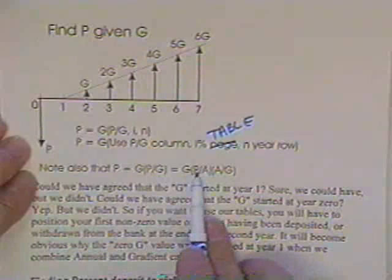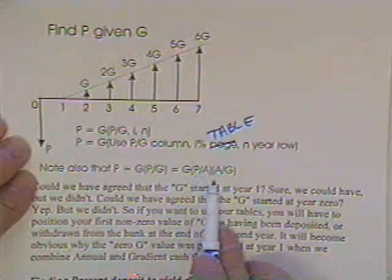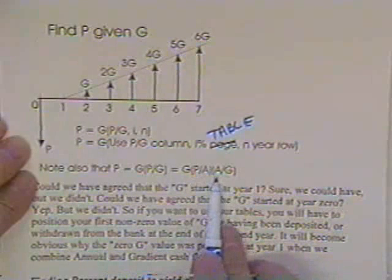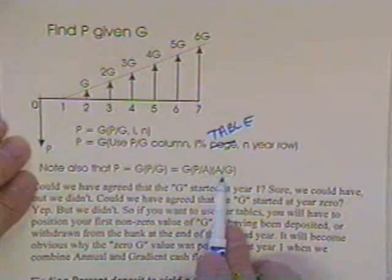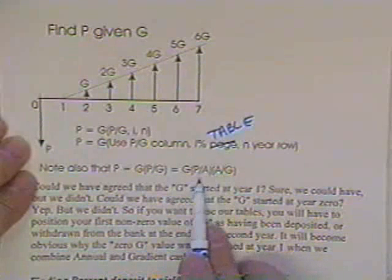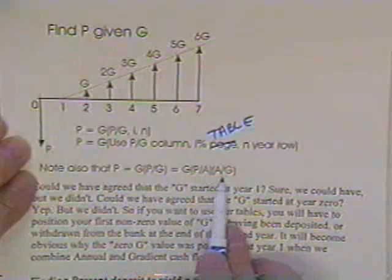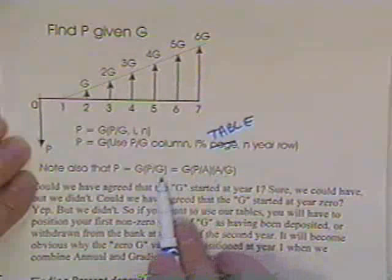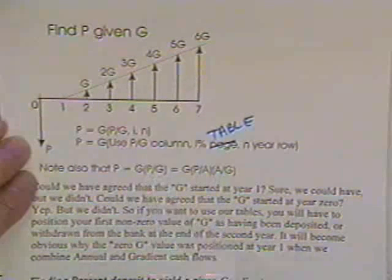You have a P over A that gives you the P you need at the top. You have an A over G that would give you the G in the bottom. The A cancels the A, so if you multiply this factor in the table times this factor in the table, you'll get the factor you want, P over G.